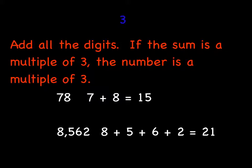Let's check some bigger numbers. 78. Seven plus eight is 15. Fifteen is a multiple of three. Eight thousand five hundred sixty-two. Let's make an easy ten here. Eight plus two is ten. Five and six is eleven. Eleven plus ten is twenty-one. And twenty-one is a multiple of three. So both 78 and 8562 have three as one of its factors.